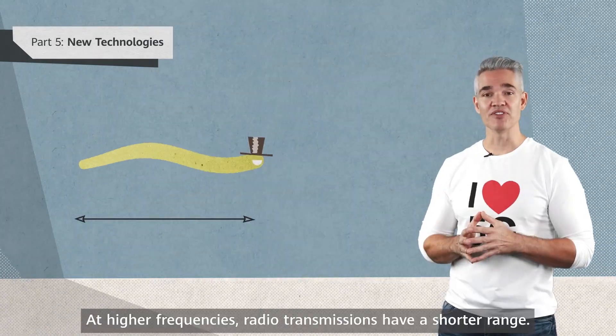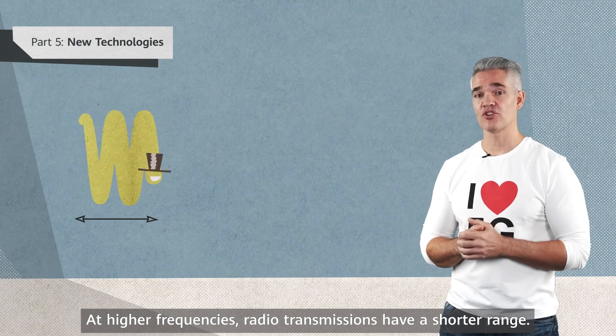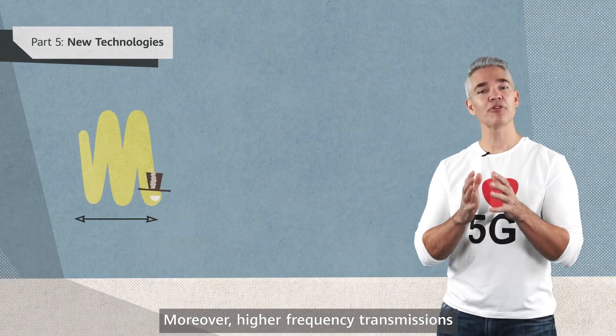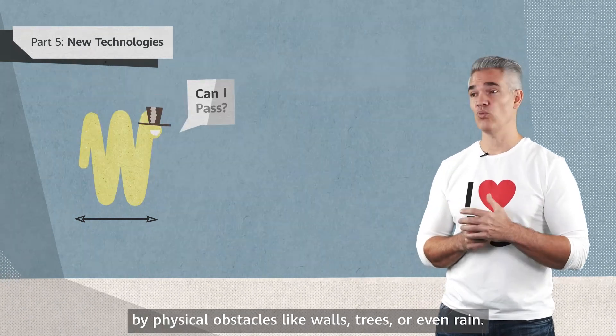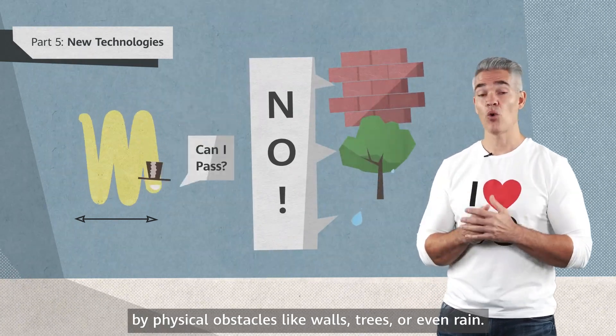At higher frequencies, radio transmissions have a shorter range. Moreover, higher frequency transmissions can be more easily disrupted by physical objects, like walls, trees, or even rain.